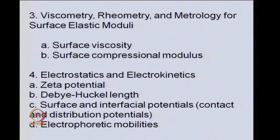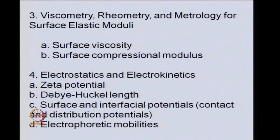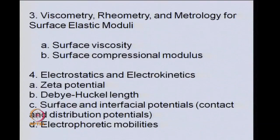We will be looking into many of these in later parts of this course. Measurements of viscosity and rheometry as well as metrology for surface elastic moduli would be necessary for measuring surface viscosity, surface compressional modulus and other surface properties. Then one needs measurements on electrostatics and electrokinetics — to name a few, one would require zeta potential measurement, Debye-Hückel length measurement, surface and interfacial potentials both contact and distribution potentials, and electrophoretic mobilities.